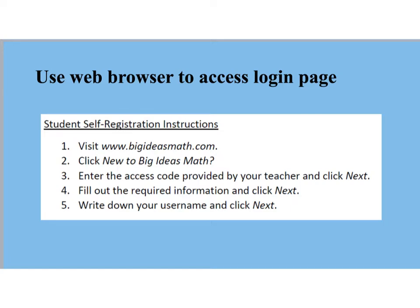Here's our checklist of the steps that we're going to follow — the student self-registration instructions so that you can register for yourself. You're going to visit www.bigideasmath.com, then click on the message which asks 'New to Big Ideas Math.' The next screen allows you to enter your access code provided by your teacher, followed by a screen where you fill in information to create your account. After that you write down your username and click next to log in.